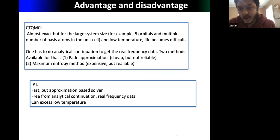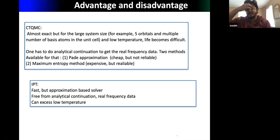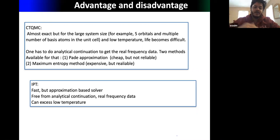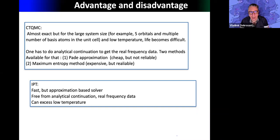CT-QMC is almost exact but for larger systems — five orbitals or more basis atoms per unit cell — going to low temperatures becomes difficult. Also, CT-QMC works on the imaginary frequency axis, so to get data on the real frequency axis you have to do analytic continuation. Other solvers like IPT are fast, give real frequency data directly, and can access low temperatures, but they involve approximations by truncating the diagrammatic expansion.